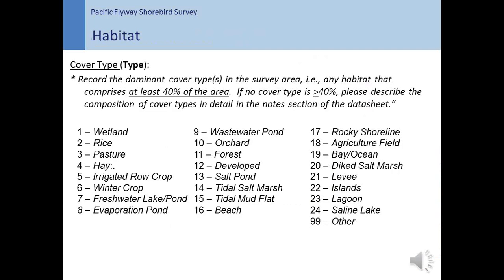Now let's go over the characteristics of the survey area. The cover type is the type of habitat that makes up the majority of the survey area. In order to be the majority, one to two cover types must comprise 80% of the survey area. Note that only two cover types can be reported, and each must be at least 40% of the survey area. Please also refer to the full protocol for all cover types listed and descriptions of each.